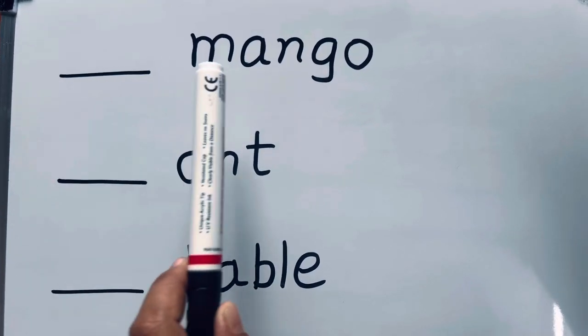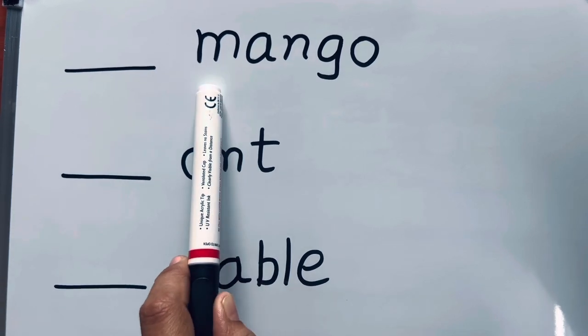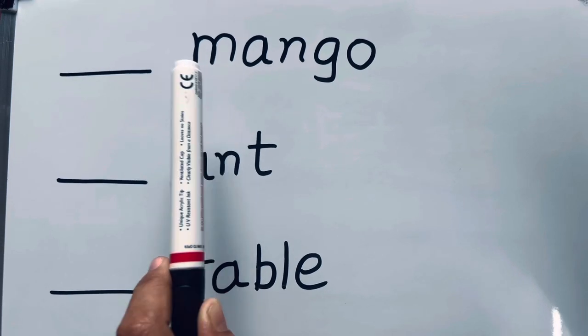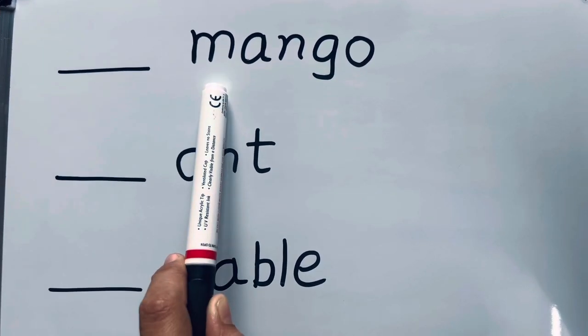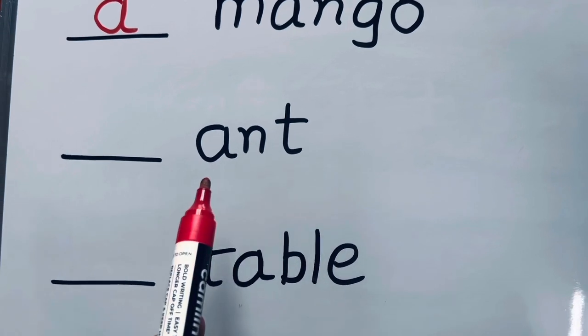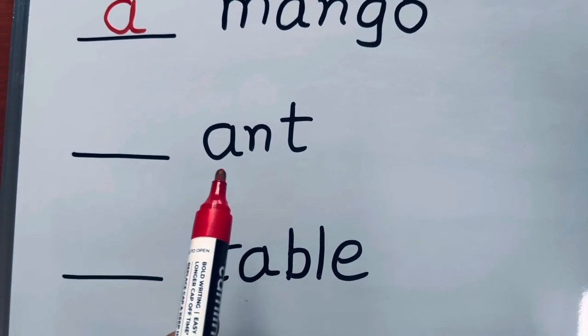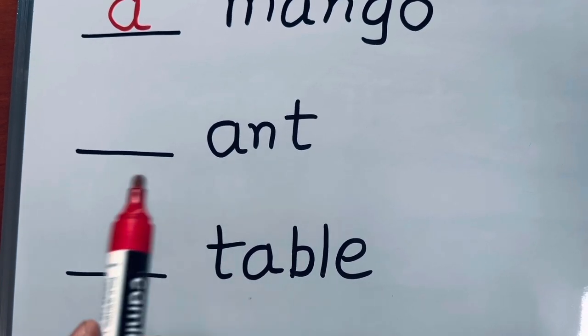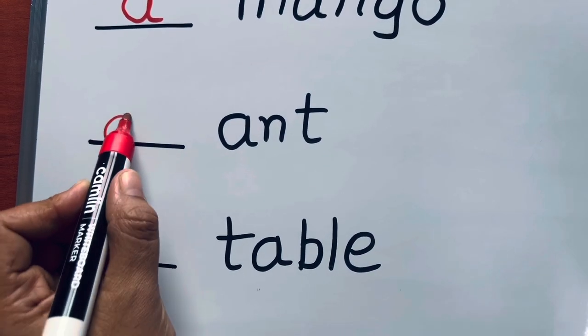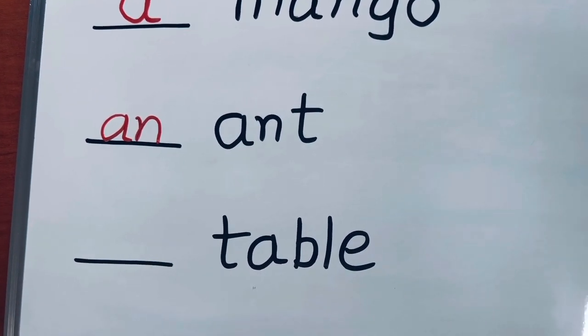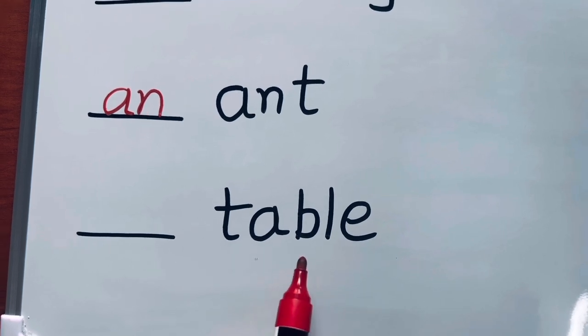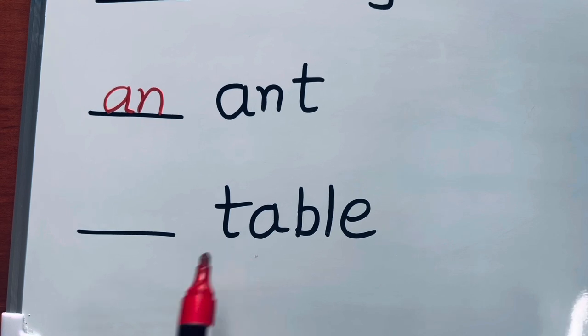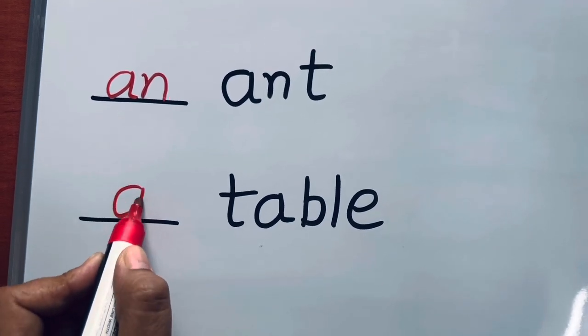Mango is a countable and singular noun. Mango starts with a consonant sound, so a mango, not an mango. Ant is a countable and singular noun, and it starts with a vowel sound, so an ant. Next, we have table. Table is countable and singular and starts with T, a consonant sound, so a table.